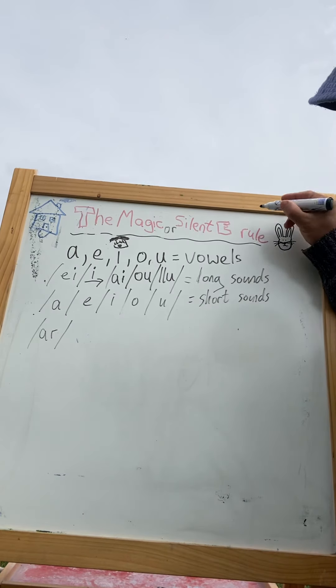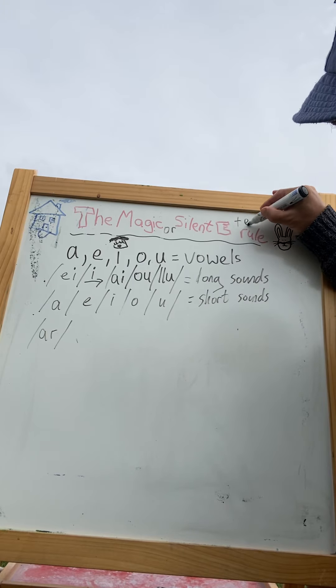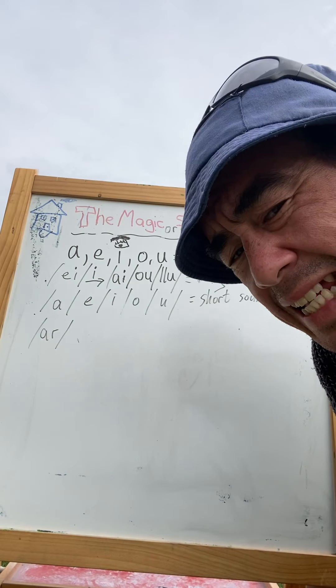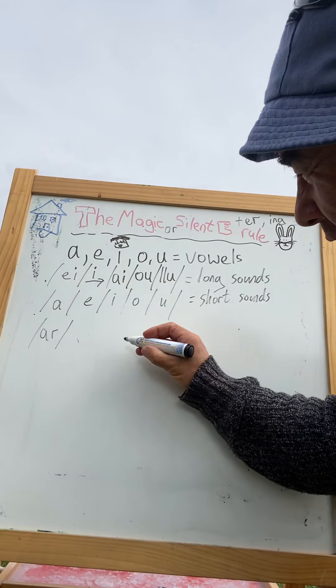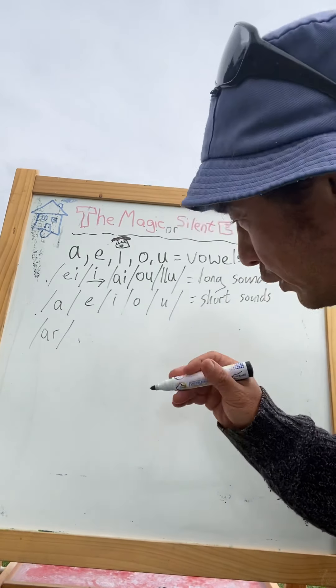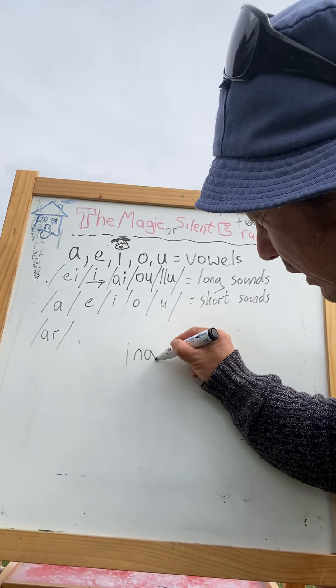For example, comparatives, and -ing. It's not just the e where it affects. Imagine when we're doing gerunds or continuous tense form. You know, it's an -ing, isn't it?